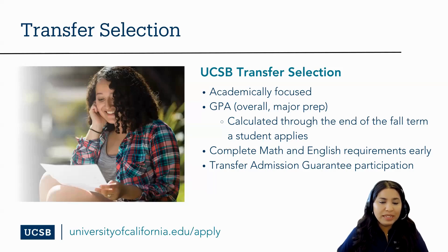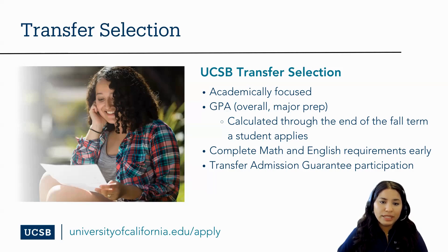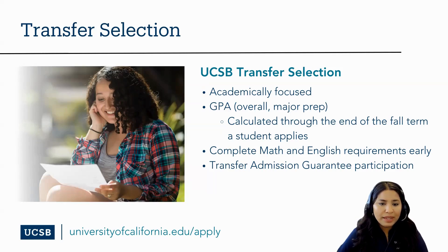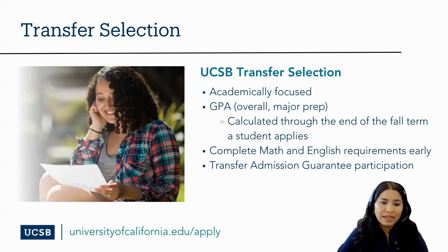While UC junior transfer eligibility is a minimum requirement in order to apply, UC transfer selection is what is going to make you a more competitive applicant. Some UC campuses will focus on a combination of academic and non-academic factors like internships, extracurricular activities, or family commitments. Here at UC Santa Barbara, we are primarily focused on your academic preparation — we want our students to be ready to succeed academically after they transfer and go above the minimum eligibility requirements. We'll consider your overall UC GPA and your major preparation GPA, calculated through the end of the fall term that you apply, as well as whether you've completed math and English requirements early and participated in the Transfer Admission Guarantee.